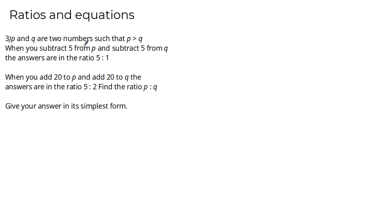Next question: p and q are two numbers with p > q. When you subtract 5 from each, the answers are in the ratio 5:1. When you add 20 to each, the answers are in the ratio 5:2. Find the ratio p:q in its simplest form. Pause the video to have a go.